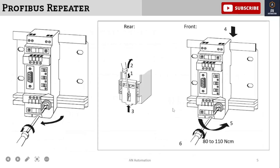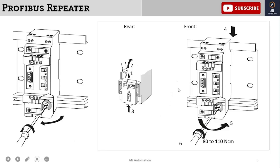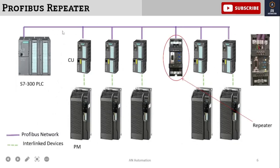Here we can see how the repeater is mounted and demounted from the DIN rail used to fix it in the panel. There is a key on the back side of the repeater — you pull it down to remove the repeater from the DIN rail. Just like an MCB or other controllers are put in and taken out of the DIN rail, you insert a flat screwdriver and press upward to release the key, and the repeater smoothly comes out.